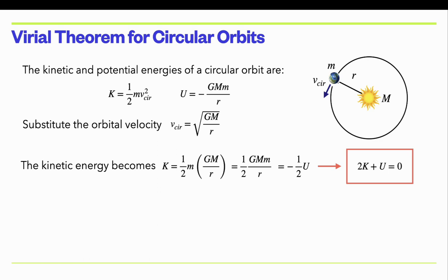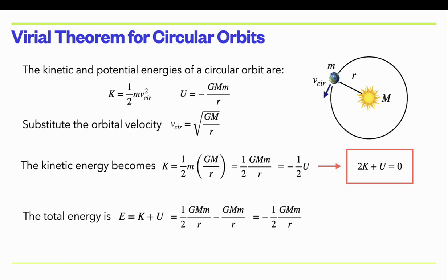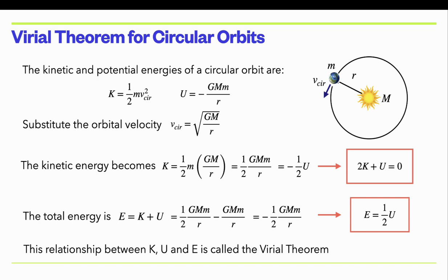If you rewrite that — cross-multiplying by two and getting everything on the same side — you can write it as 2K + U = 0. So that's the Virial Theorem. This is for the simplest case of a circular orbit: at any point in its orbit, this is instantaneously and exactly true. The total energy, which is the sum of kinetic plus potential energy, is just −½GMm/r. So the total energy is just one half the potential energy. These relationships are called the Virial Theorem.